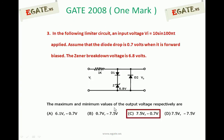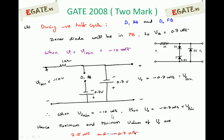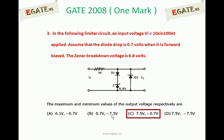So the maximum and minimum values of V0 are 7.5V and -0.7V. For the given circuit, the correct answer is C: 7.5V and -0.7V. Thank you.